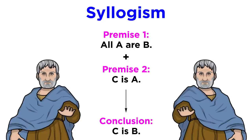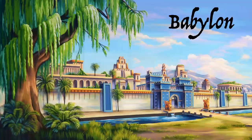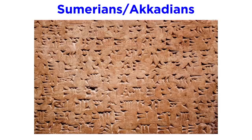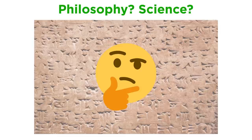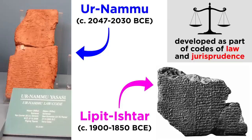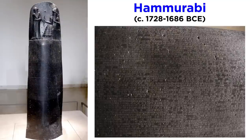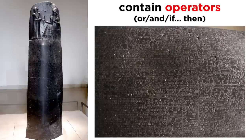This basic format is what Aristotle would call a syllogism, but some of its early elements can be identified millennia before him. The earliest source we have on formulating some kind of logical operators are the Babylonians, specifically with the Sumerians and Akkadians in Mesopotamia. Instead of introducing them in an analysis of discourse such as philosophy or science, they were developed as part of their codes of law and jurisprudence — especially the Ur-Nammu (c. 2047–2030 BCE), the Lipit-Ishtar (c. 1900–1850 BCE), and the Hammurabi (1728–1686 BCE). They would be publicly written on slabs or walls, and they contained basic operators such as 'or,' 'and,' and 'if-then,' much like premises.